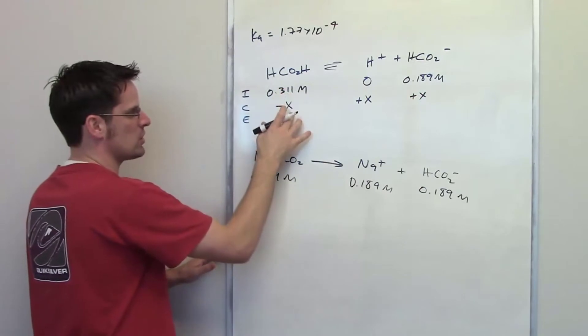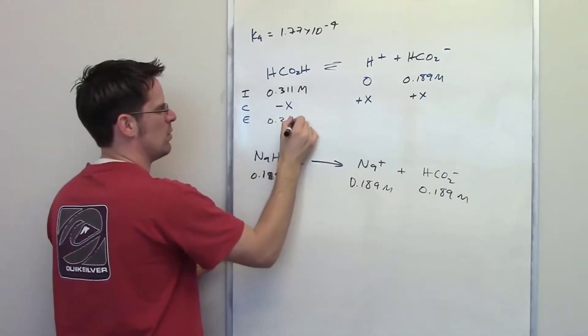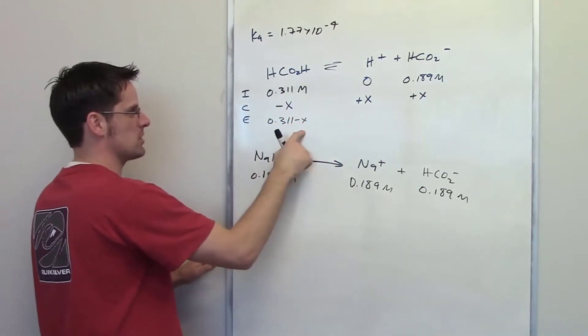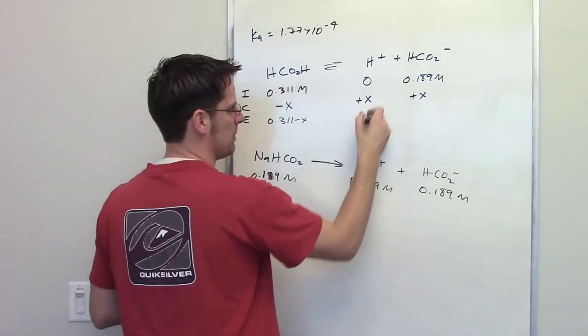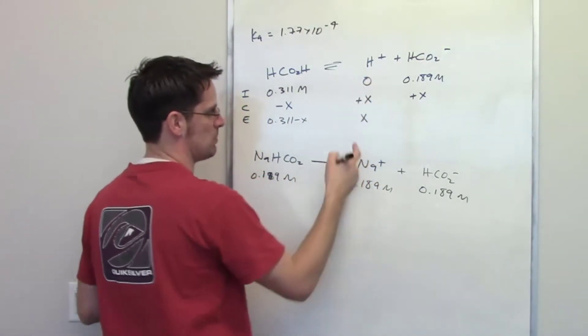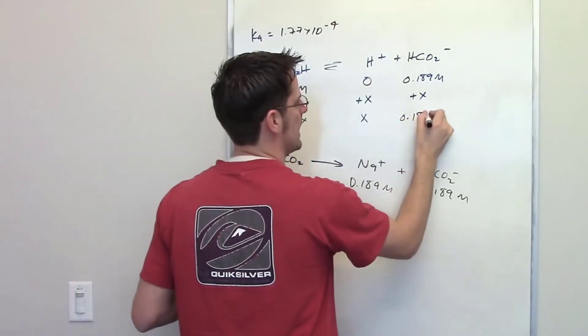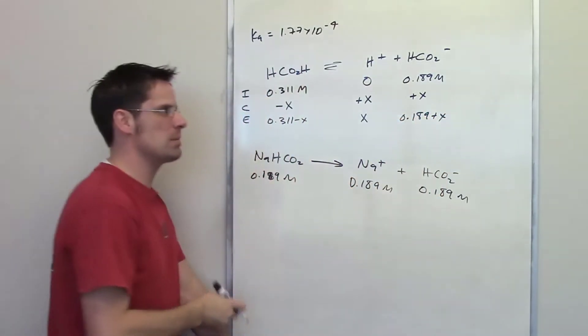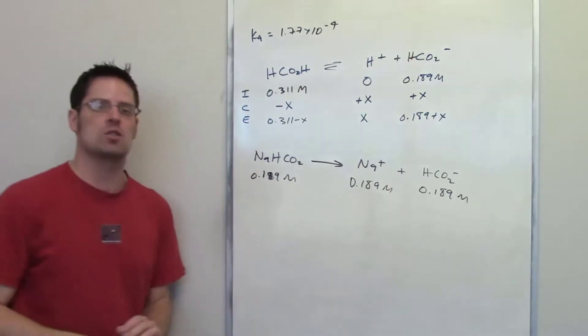We add row one to row two, we get 0.311 minus X as the final equilibrium concentration of formic acid, zero plus X, or just X, as the final equilibrium concentration of H plus, and 0.189 plus X is the final equilibrium concentration of HCO2 minus or formate.